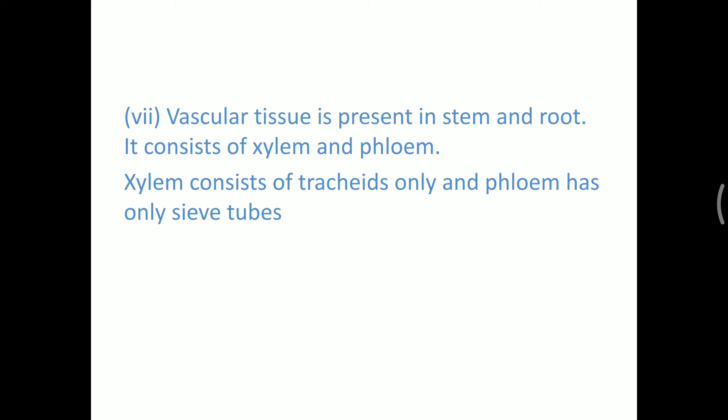Vascular system is present in pteridophytes, but there is only presence of tracheids and sieve tubes. There is no presence of other parts of xylem and phloem. This represents the first development of vascular tissue in terrestrial plants, but it is not well differentiated.